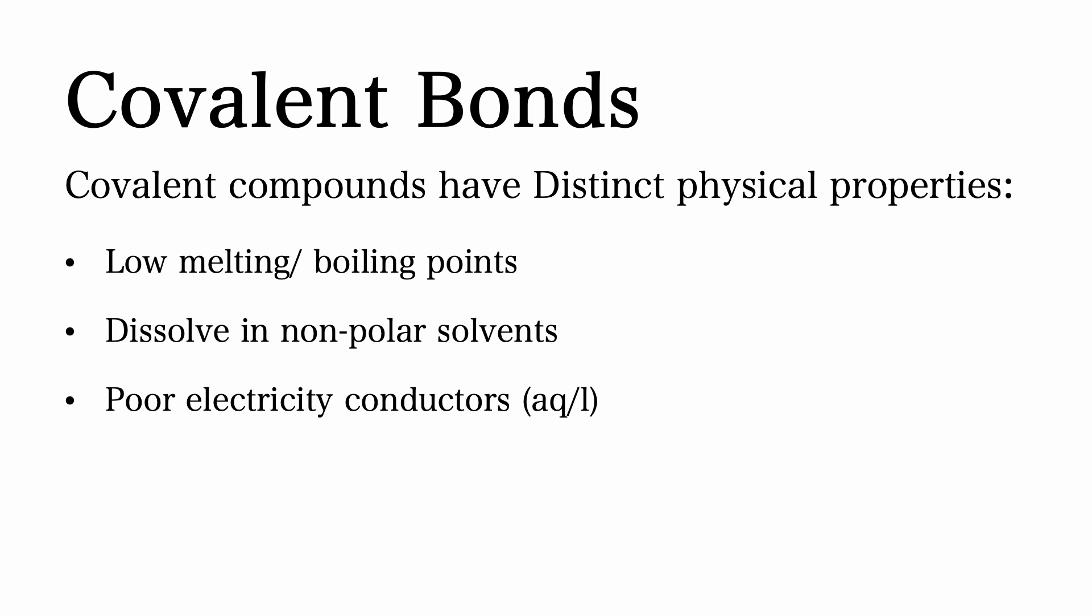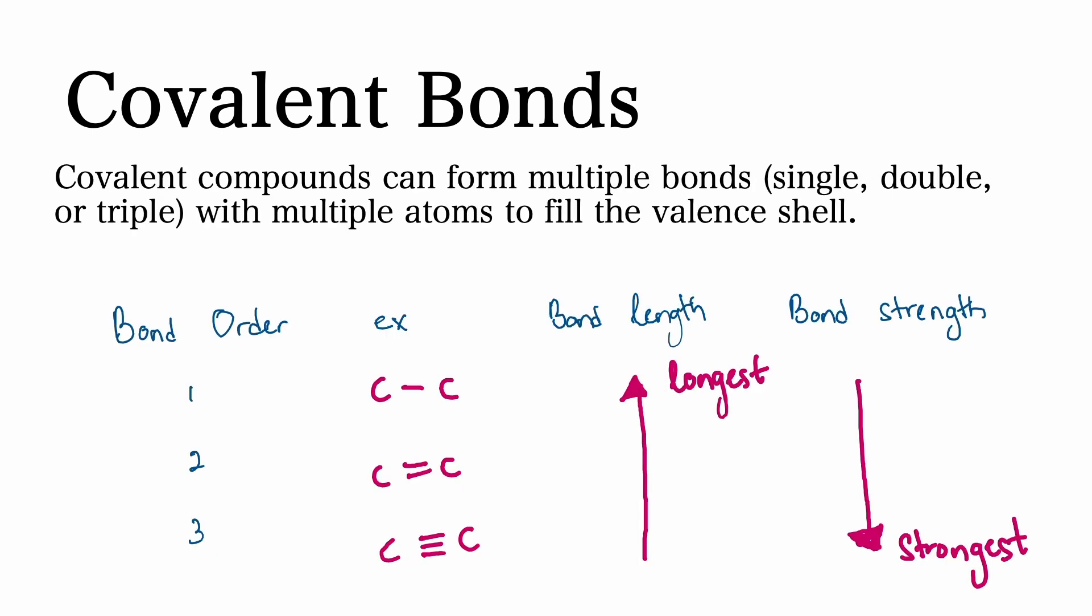Covalent compounds have distinct physical properties, namely low melting and boiling points, dissolution in nonpolar solvents, and the poor conduction of electricity in aqueous or molten forms. Additionally, due to the sharing of electrons in covalent bonds, covalent compounds can form multiple bonds to fill the valence shell.